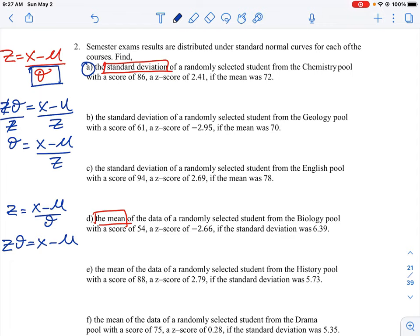And then we need to isolate the letter mu. So that means this is x minus mu. So we want to get rid of the negative. So we're going to do that by bringing it over to the other side. The way we get rid of the negative mu is that we add positive mu. So this is going to go away.